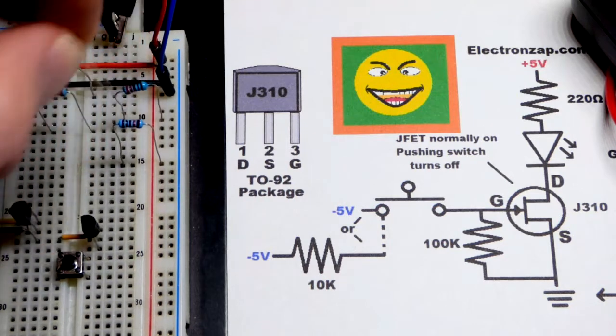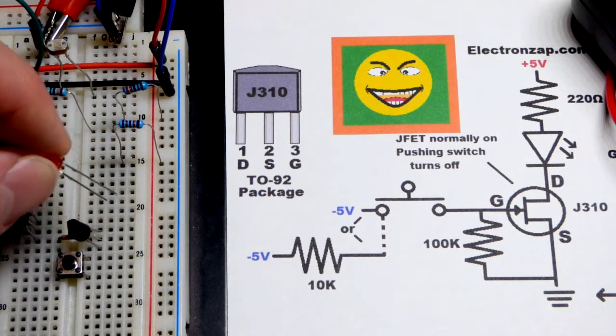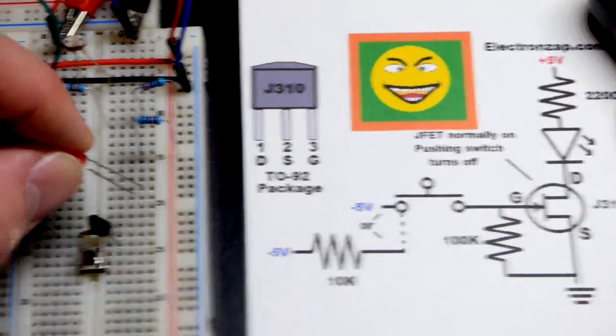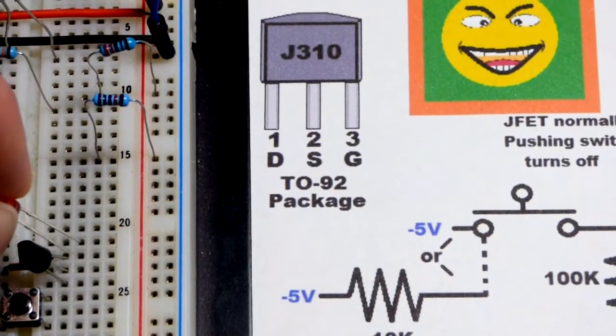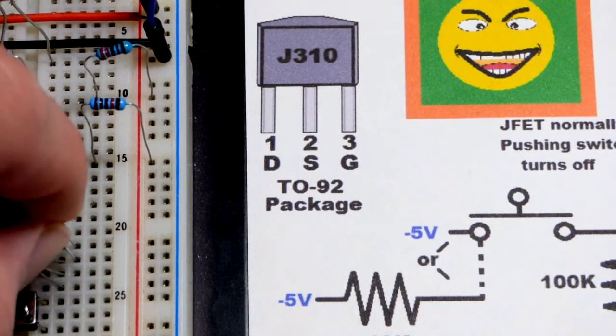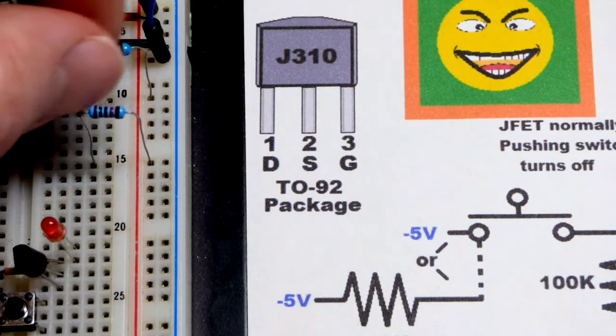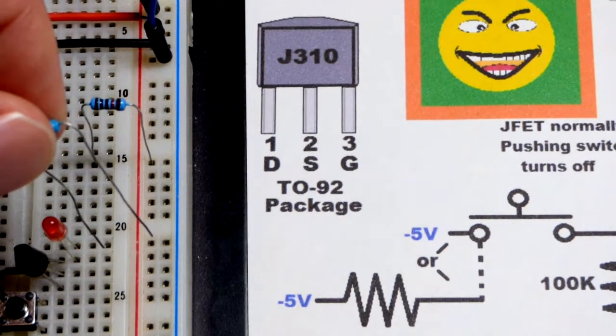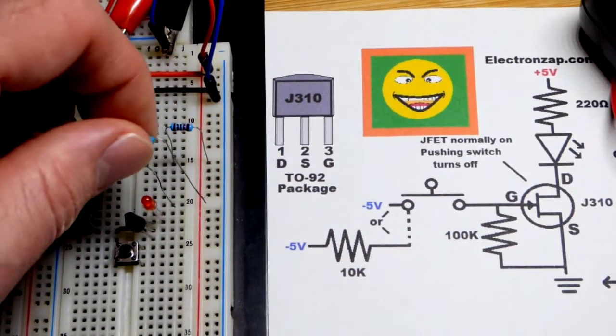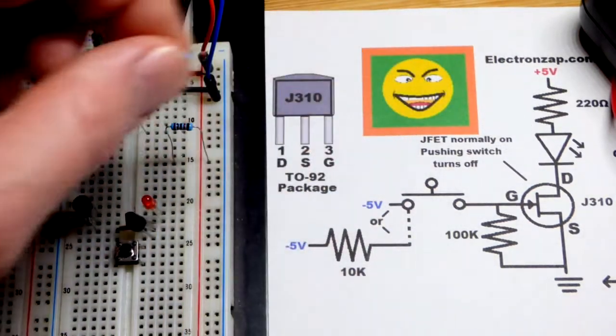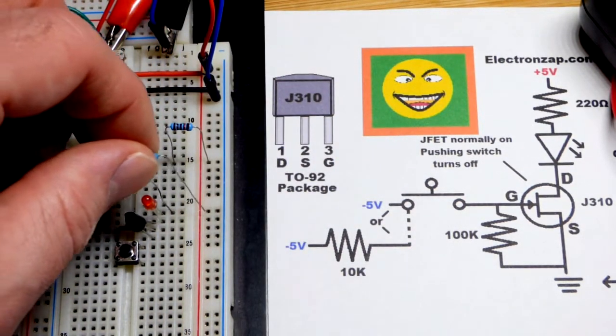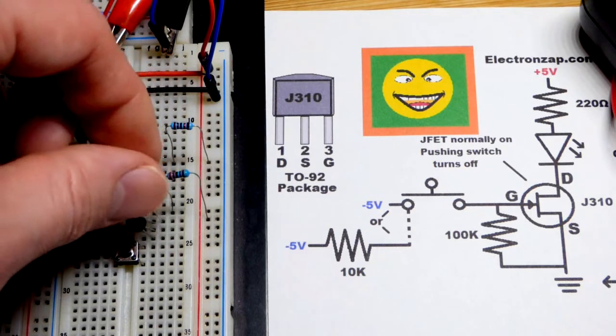The drain goes to where the LED cathode is. The long lead, the anode, goes up one row. And then we'll grab a 220 ohm resistor going from the positive side of the power supply, which is now five volts in relationship to our virtual ground.